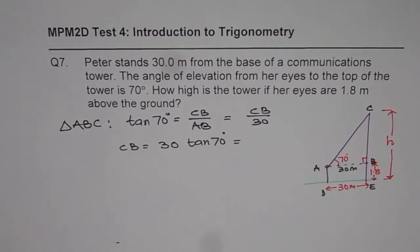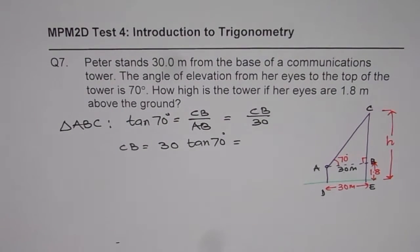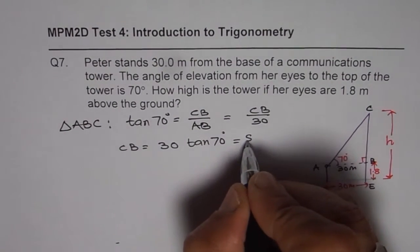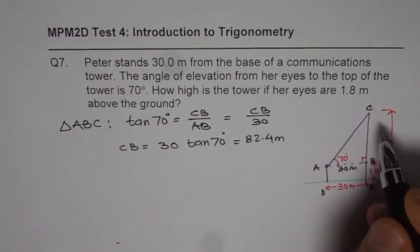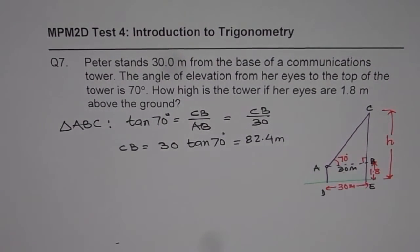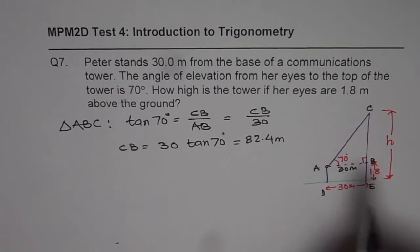We can use calculator to find this answer. So which is 30 times tan 70, that gives us 82.424, 82.4 meters. So we know CB now. Since height is given in one decimal place, I have rounded it to one decimal place.